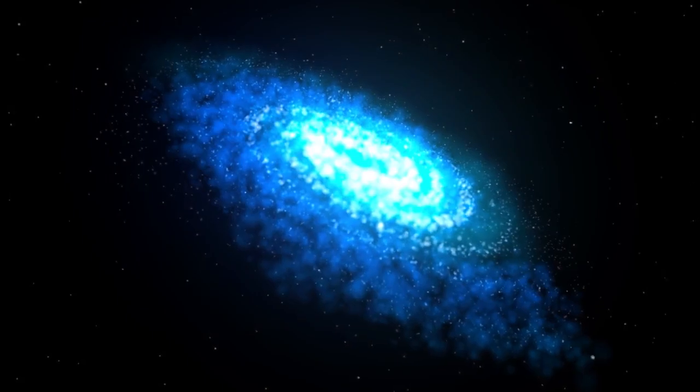Now the other theory is MACHOs, massive compact halo objects. These are actually made of baryonic matter, like the matter we are used to day to day, but are objects of extremely strong gravity. These range from black holes to neutron stars to brown dwarfs.